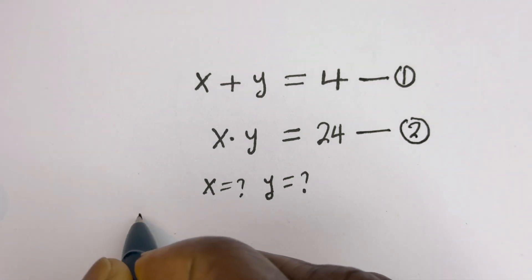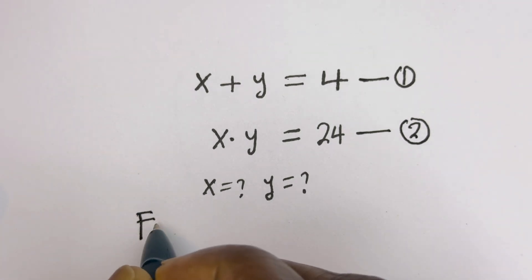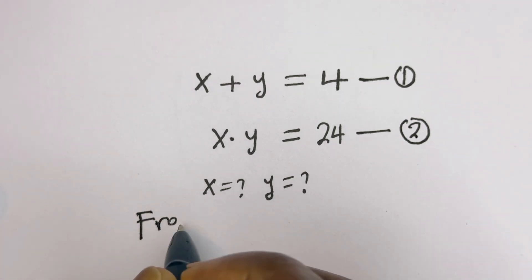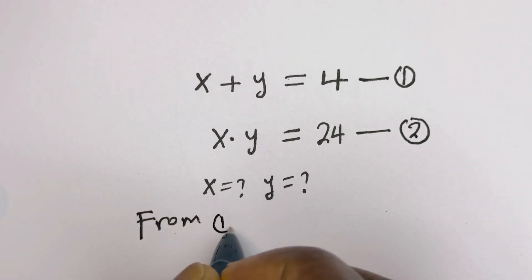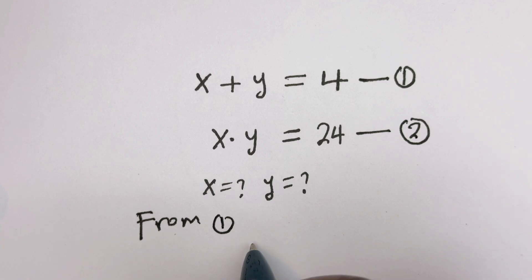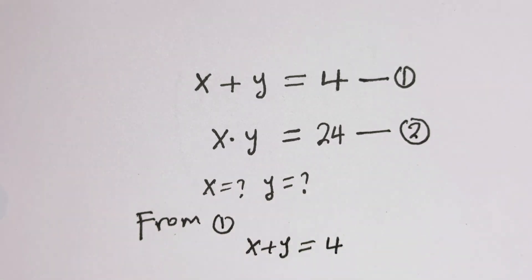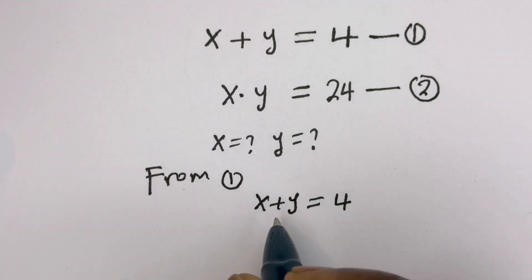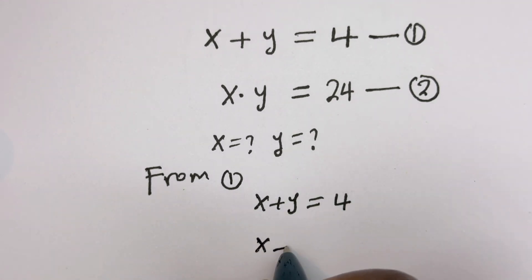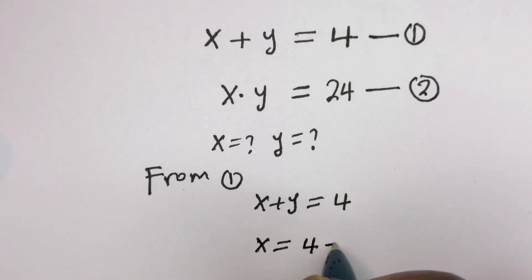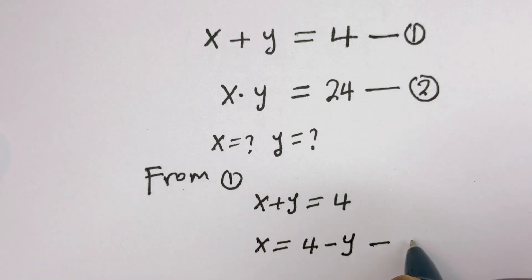From equation 1, s plus y is equal to 4, then s is equal to 4 minus y. Let's call this equation 3.